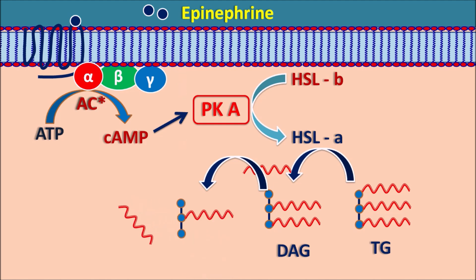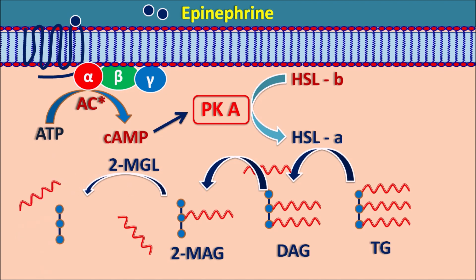Then again, one of the fatty acids is released from this DAG by the same enzyme HSL, forming MAG, monoacylglycerol. Here this acyl group is attached at the second position, so it is called 2-monoacylglycerol. Finally, another enzyme, 2-monoacylglycerol lipase, acts on the MAG such that the third fatty acid is also released, forming glycerol as well as free fatty acid. In this way, the three molecules of fatty acids are released as free fatty acids during lipolysis through the hormone sensitive lipase enzyme.